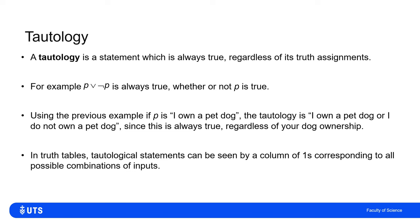When we look at truth tables, we identify a compound statement which is a tautology by seeing a column entirely of truths, or ones.